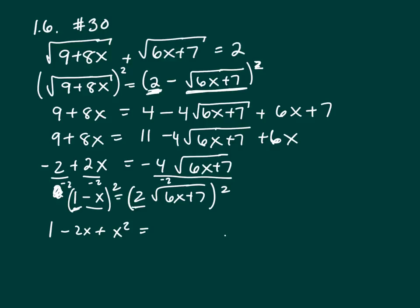And the right-hand side is square the 2, and that becomes a 4. Square the radical, and you're left with 6x plus 7.